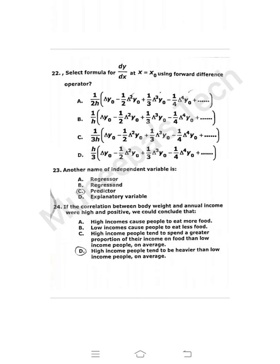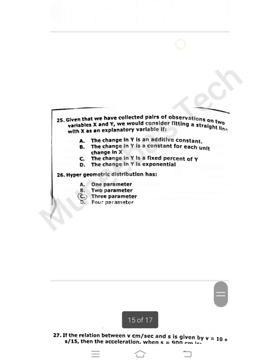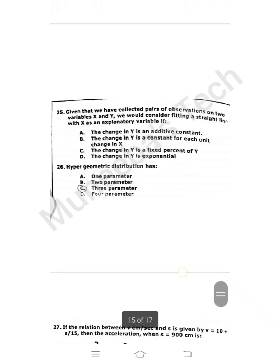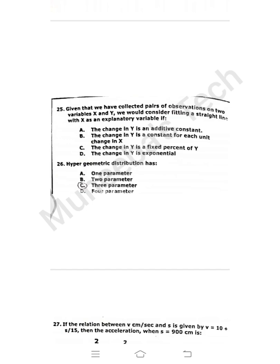Question 24: If the correlation between body weight and annual income were high and positive, we could conclude that: If we read all these options, option D is more appropriate - that high income people tend to be heavier than low income people on average. Question 25: Given that we have collected pairs of observations on two variables x and y, we would consider fitting a straight line with x as an explanatory variable if the change in y is a constant for each unit. In my opinion it may be option D but I'm not sure.